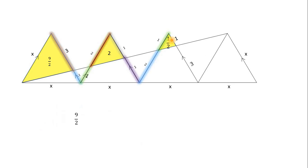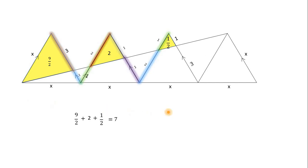The overall sum of the three yellow shaded regions is 9/2 plus 2 plus 1/2, which equals 7. Using this method we can solve this problem. If you like my method, please like this video. If you have any queries, you can comment, and thank you for watching.